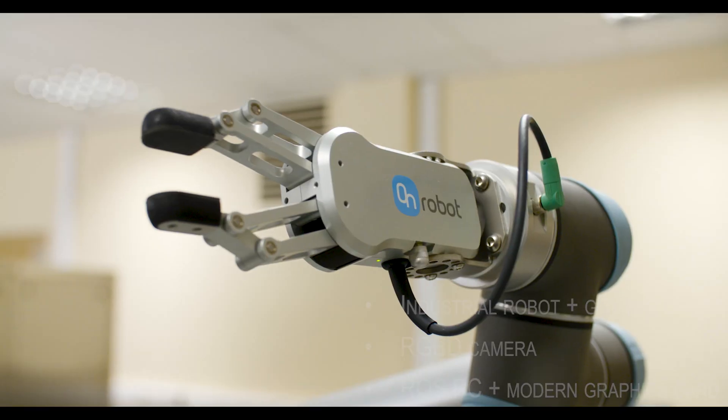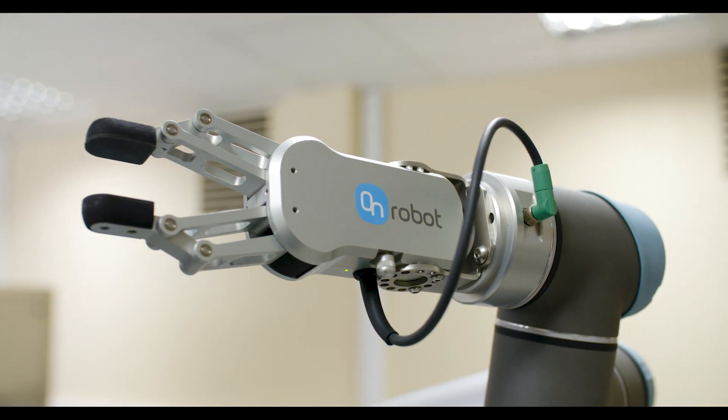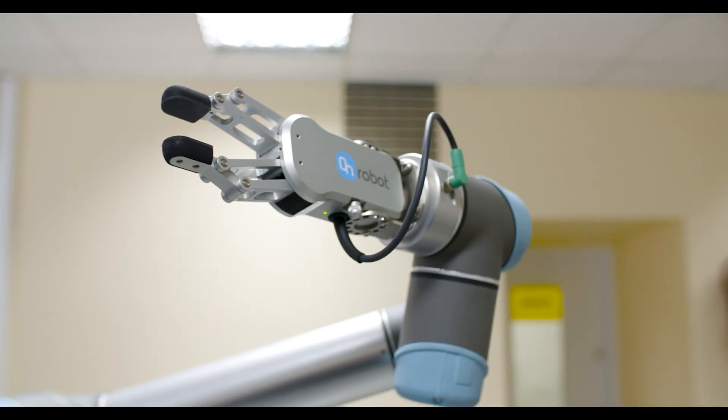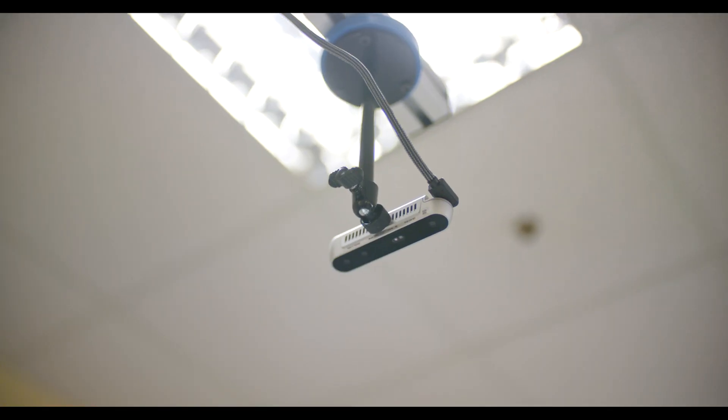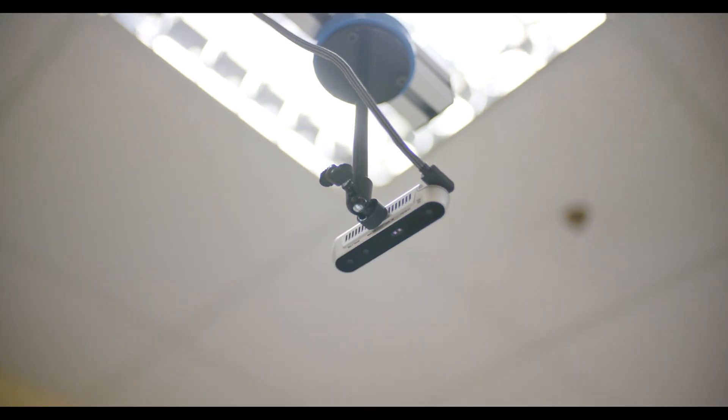Hardware costs respectively depend on industrial robot, camera, and gripper types and brands. The hardware that is used in these modules costs approximately 30,000 euros.